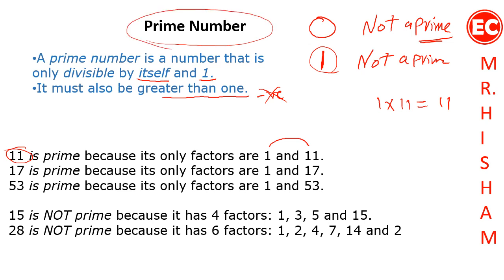Like 11, 17, and 53. But why is 15 not a prime number? Because if you multiply 5 by 3, it gives you 15, and 1 times 15 gives you 15.